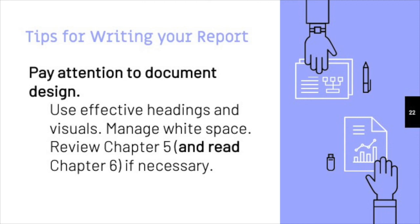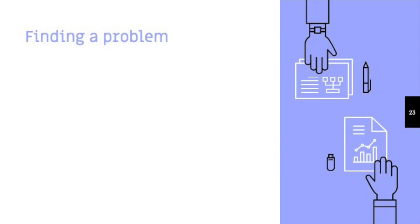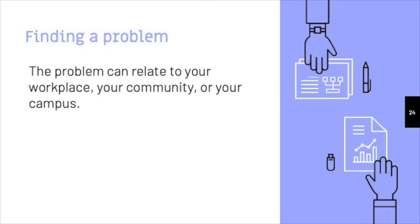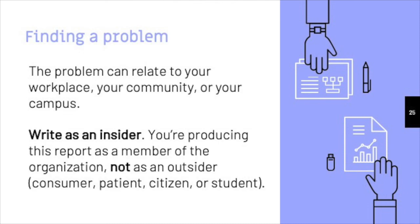Your first step is to figure out a problem that you could recommend a solution for. According to the assignment, the problem can relate to your workplace, your community, or even the college campus. But remember that for the purpose of the assignment, you are writing as a part of the organization, not as an outsider — imagine that you're an employee given the task of making a specific recommendation for improvement. That doesn't mean you can't use your perspective as a customer, community member, or student to find problems. Those perspectives can be valuable, but when you sit down to write, do so as a hypothetical member of the organization, not as a consumer.